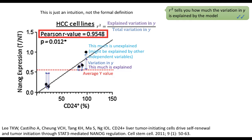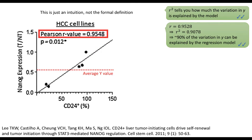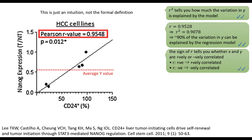A formal definition of r-square would take into account the variations of every data point. Basically, when you see r-value, you can square it. And when you have r-square equals 0.9, you can understand it as 90% of the variations in y could be explained by the regression model. The positive or negative sign of r also tells you whether x and y are positively or negatively correlated. Of course, when you square the r-value, this sign will be gone.